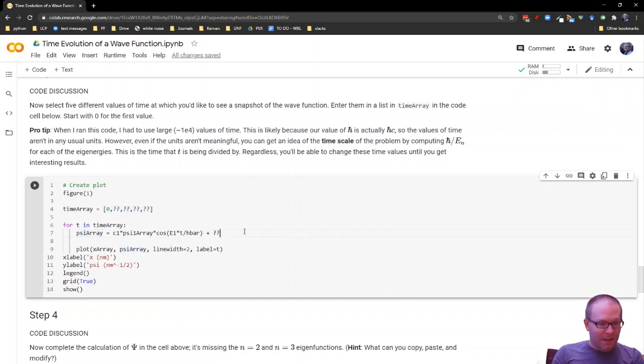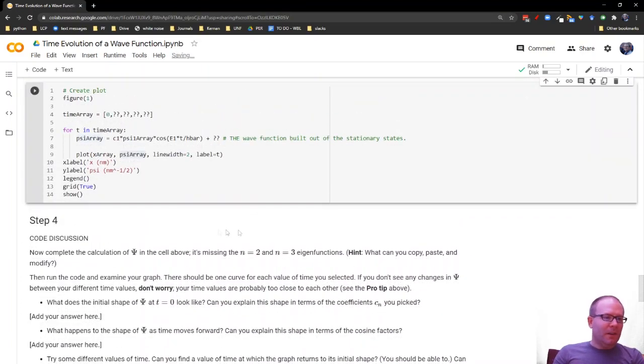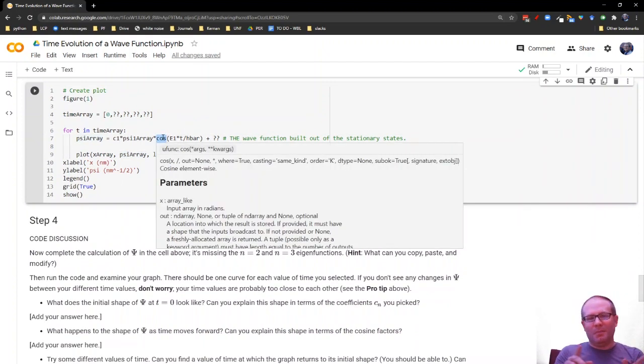It will then carry out the construction of the wave function here. So this psi array, this is the wave function going to be built out of the stationary states. And you notice I've left you a couple question marks here for you to complete this part. So you basically take this part, copy and paste it over here, do the same thing for c_1, for c_2, psi_2, and e_2. Then copy and paste that, do the same thing for c_3, psi_3, e_3. And it's going to give you a plot of the entire wave function at those different snapshots in time.